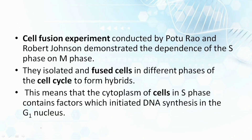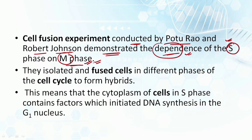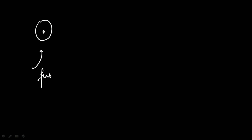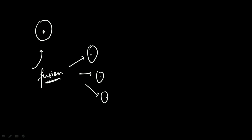In this experiment, the demonstration was mainly done to show the dependence of the S phase over the M phase. What was done was that they isolated and fused cells in different phases of the cell cycle to form hybrids. The cytoplasm of cells in the S phase contains factors which initiated DNA synthesis in the G1 nucleus. Cells were intermixed depending on which phase they were undergoing — G1, S, G2, or M — and the final conclusions were then made.